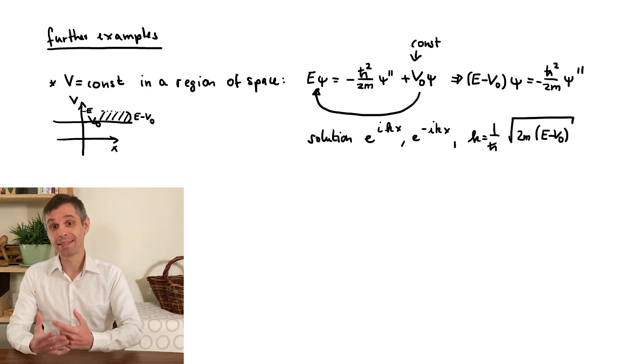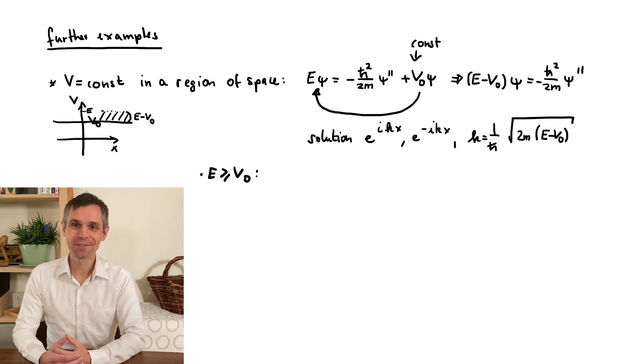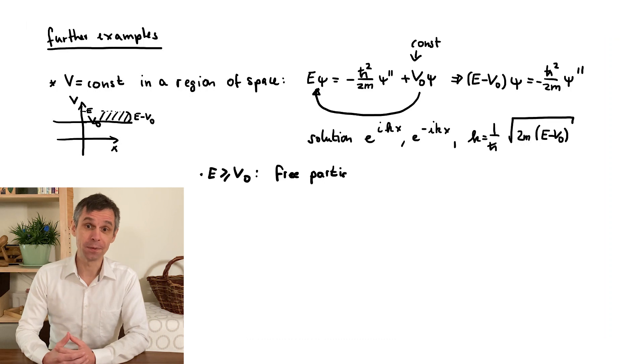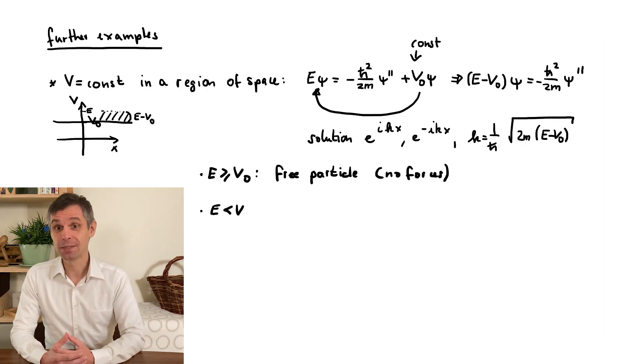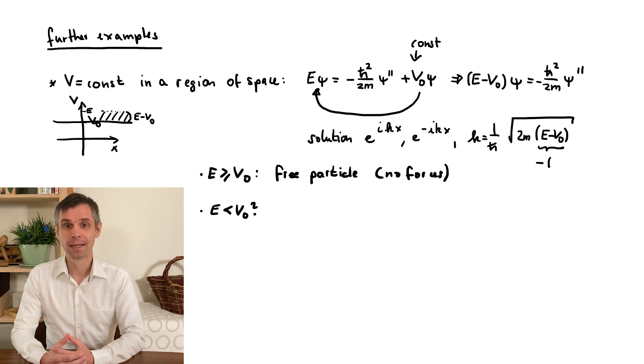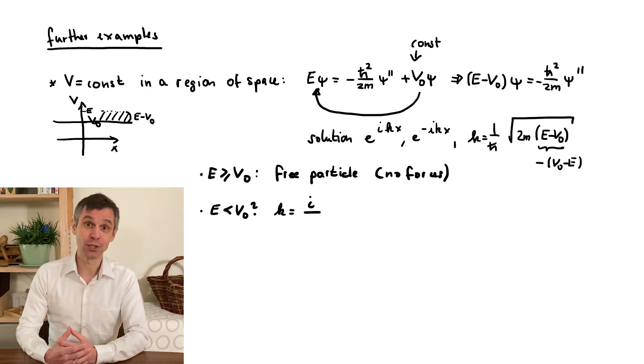Now, classically the kinetic energy cannot be negative, it involves the square of the momentum, but quantum mechanically we can still find mathematical solutions when this happens. However, the wave number then becomes purely imaginary.